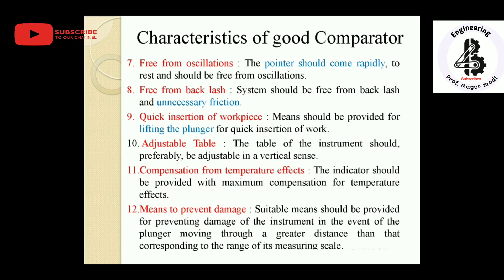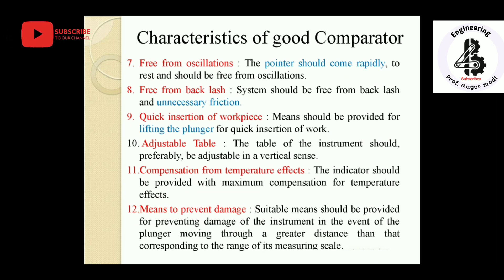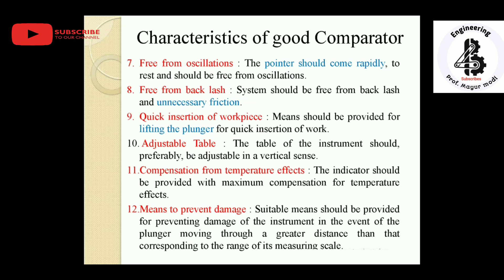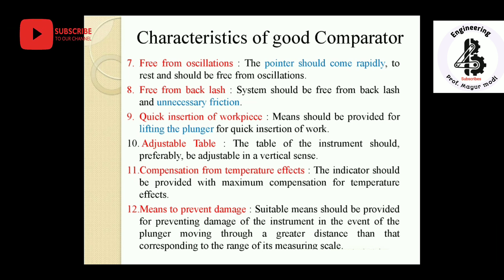Eleventh, compensation for temperature effects — the indicator should provide maximum compensation for temperature effects, since increasing temperature changes the characteristics of all materials, ensuring no effect of temperature during measurements. Twelfth, means to prevent damage — suitable means should be provided to prevent damage to the instrument in the event of the plunger moving beyond the range of its measuring scale.